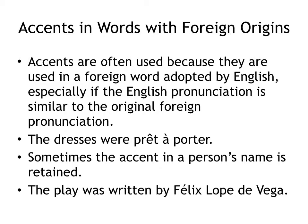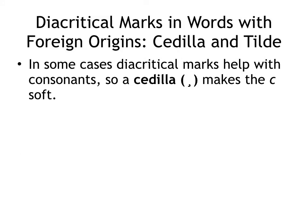Now let me tell you about some specific diacritical marks. In some cases, diacritical marks do help with consonants — more common on vowels, but sometimes with consonants. A cedilla makes the C soft. The cedilla is that little tail that goes on the bottom of a C. For example, façade. Façade is not a native English word; in fact, it comes from the French. That tells us that the C is pronounced like an S — it's façade.